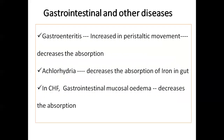Finally, gastrointestinal and other diseases. In gastroenteritis, there is increased peristaltic movement, which decreases the absorption rate of drugs. In achlorhydria, the absorption of iron is decreased. In congestive heart failure, patients have gastrointestinal mucosal edema — a retention of fluids — which decreases absorption. So gastrointestinal diseases affect the rate of absorption of certain drugs.